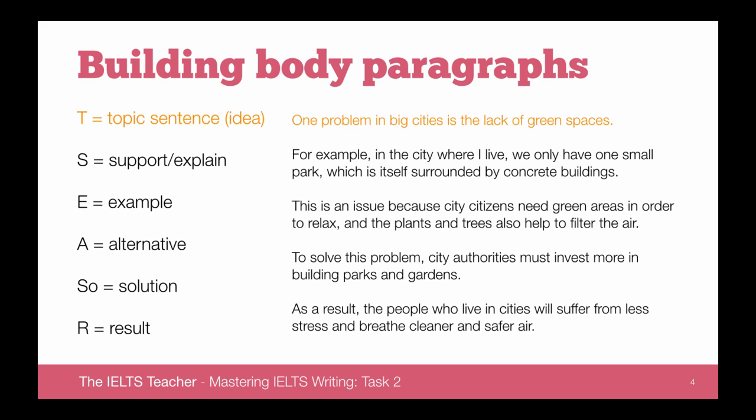You can follow the topic sentence with any of the following: a supporting sentence (also known as an explaining sentence), an example, or a result. Most of the time you're going to follow it with an example or a supporting sentence in either order. Here we see an example of a lack of green spaces: 'For example, in the city where I live, we only have one small park, which is itself surrounded by concrete buildings.' We then follow this with a supporting sentence: 'This is an issue because city citizens need green areas in order to relax, and the plants and trees also help to filter the air.'